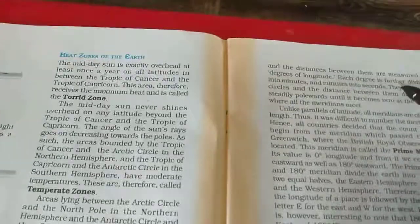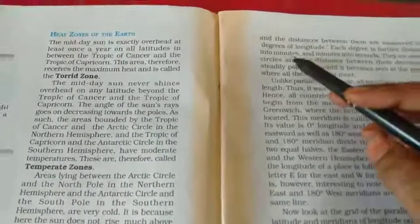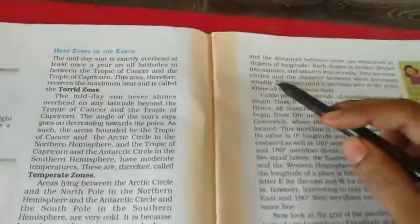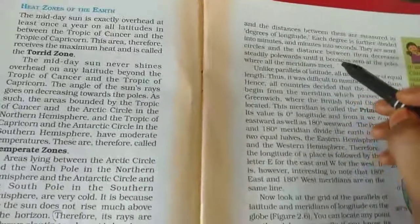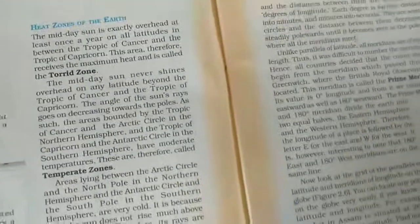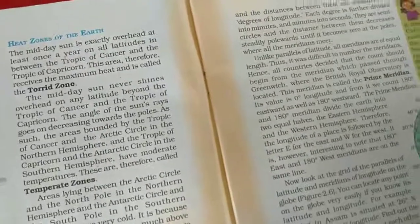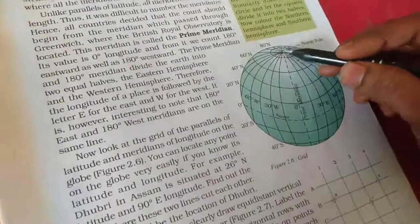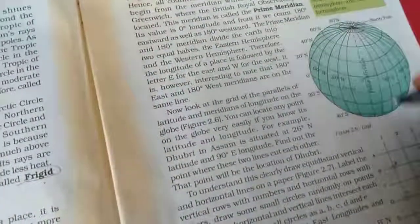Each degree is further divided into minutes and minutes into seconds. They are semi-circles and the distance between them decreases steadily polewards until it becomes zero at the poles where all the meridians meet. Meridians are North Pole and the South Pole. Every line, where they meet, those places are called a meridian. The center line is a meridian.